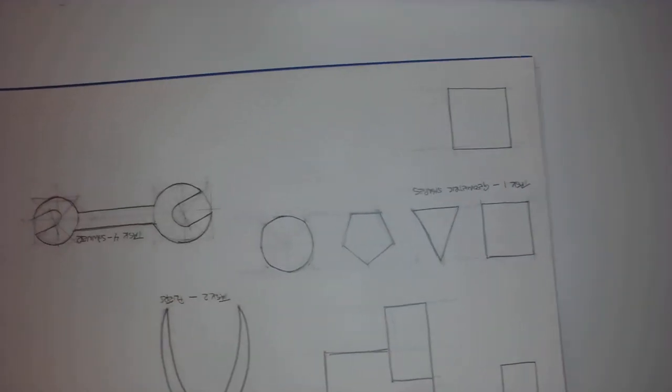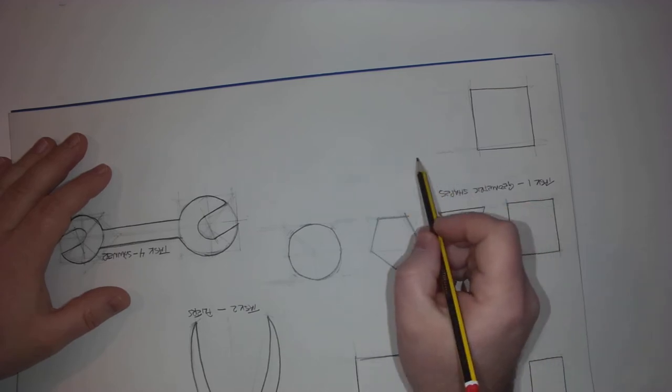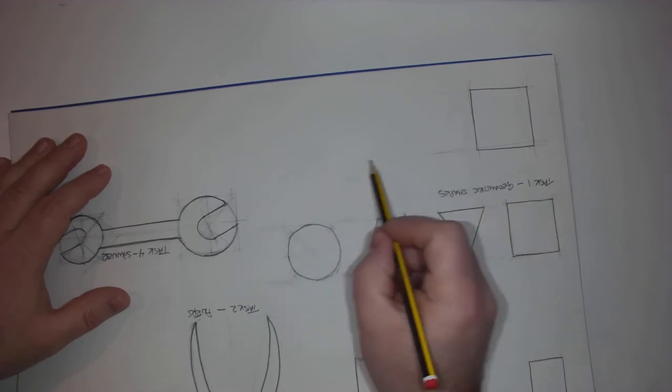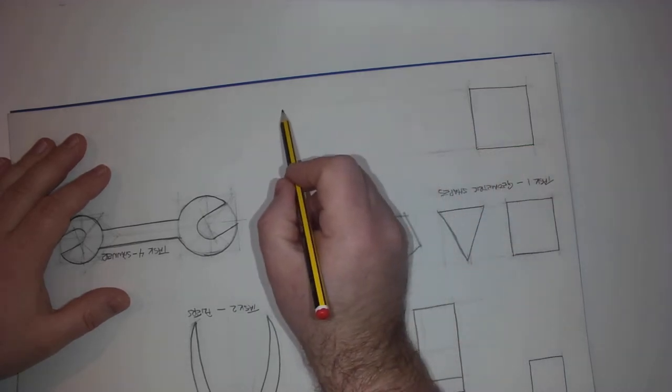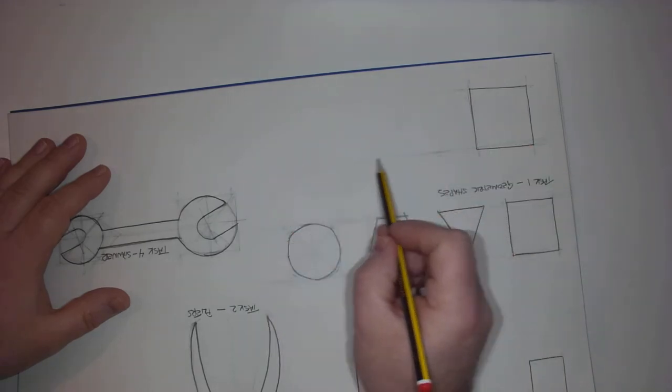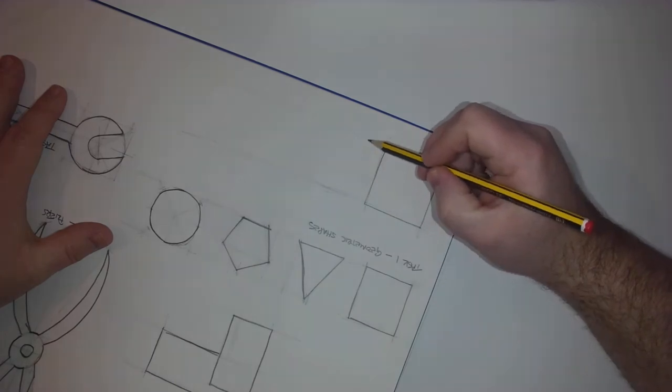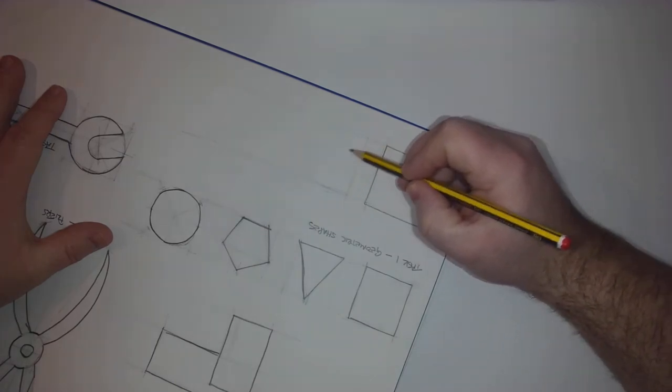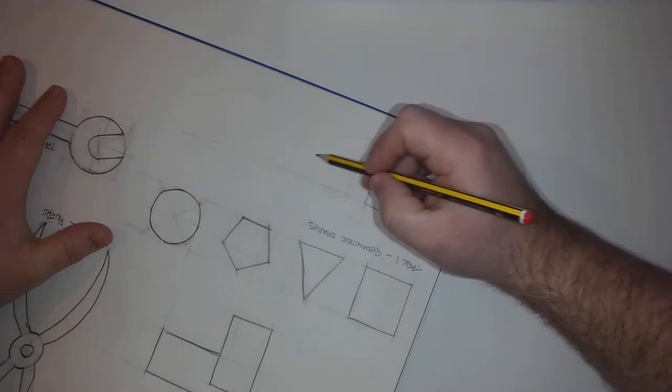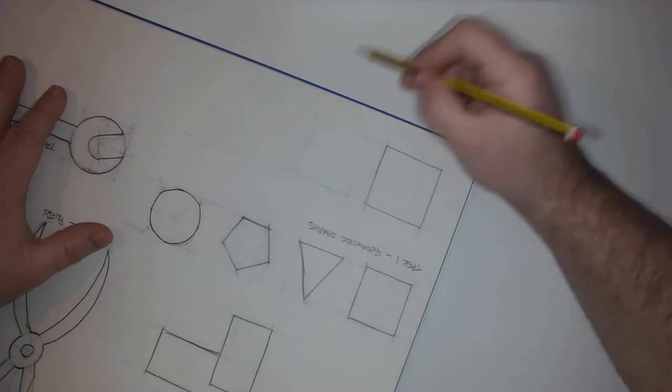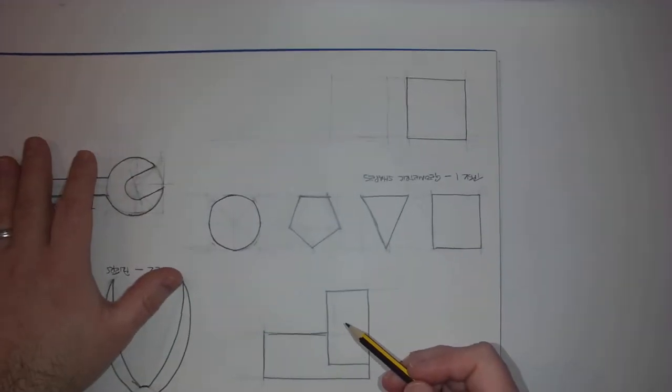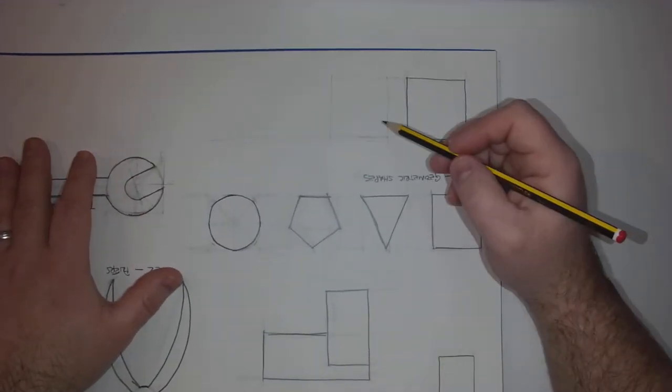If we start to look at the triangle now, again, the basis is round about a square. So, if I extend these horizontal construction lines out, give myself a constructed square to start with.